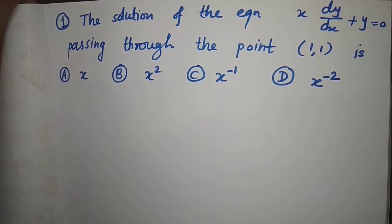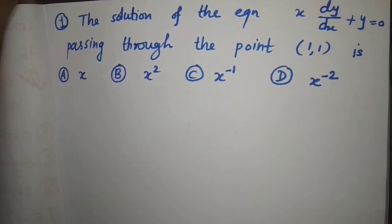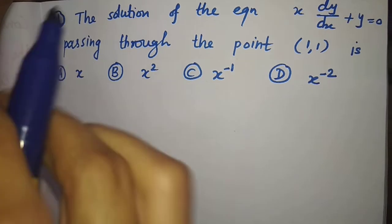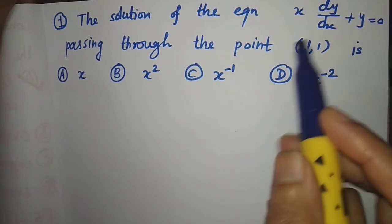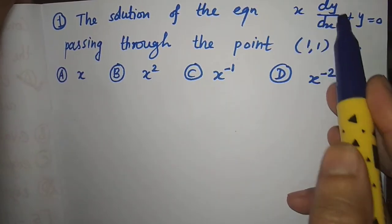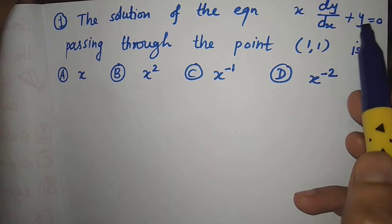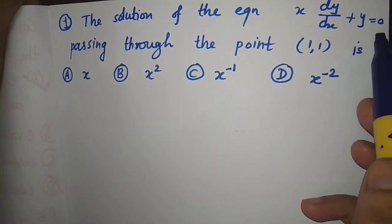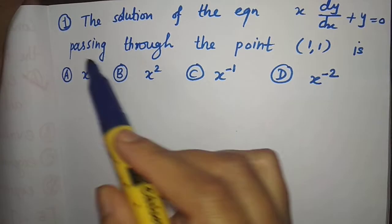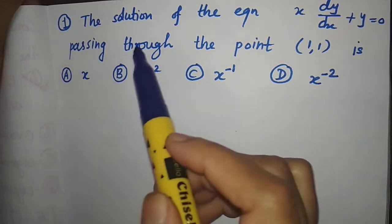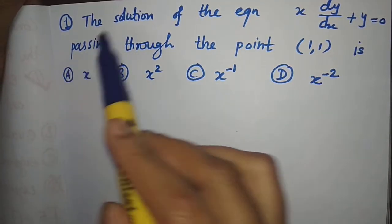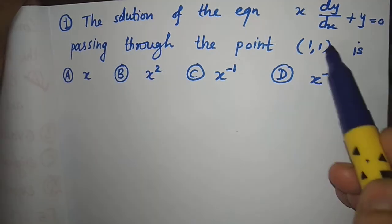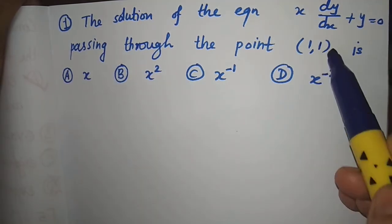Now let us see the problem. The problem is about a differential equation given by x into dy by dx plus y is equal to 0, and the solution when passing through the point (1, 1) is.